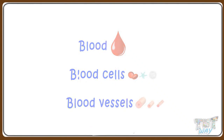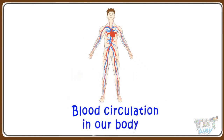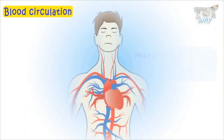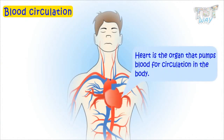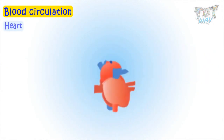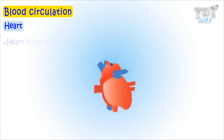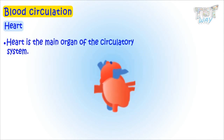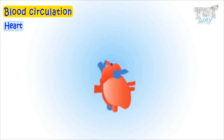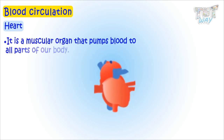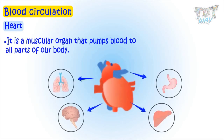Now let's learn how the blood circulates in our body. The heart is the organ that pumps blood for circulation in the body. The heart is the main organ of the circulatory system — it is a muscular organ that pumps blood to all parts of our body.